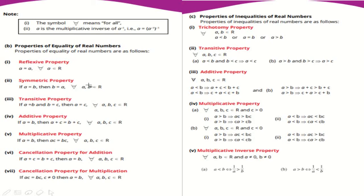اب real numbers کی properties equality اور inequality میں دیکھیں گے۔ سب سے پہلی Reflexive Property: کوئی بھی real number 'a' اپنے آپ کے equal ہوتا ہے — a = a۔ جیسے 5 equals 5، 7 equals 7۔ کوئی بھی number ہو، وہ اپنے آپ کے equal ہی ہوتا ہے — یہ Reflexive Property ہے۔